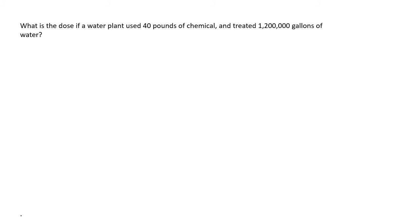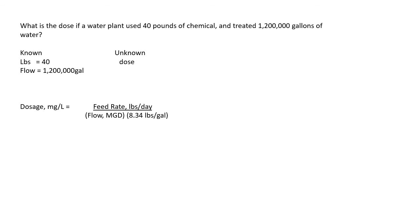What is the dose if a water plant used 40 pounds of chemical and treated 1,200,000 gallons of water? What we know: 40 pounds of chemical used, flow of 1,200,000 gallons. What we don't know is the dose. Again, to find dose in milligrams per liter: feed rate pounds per day divided by flow in MGD times 8.34 pounds per gallon. Our flow is in gallons, not MGD, so we need to convert.